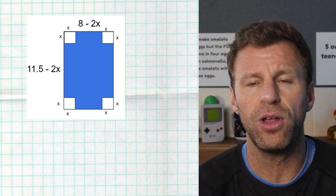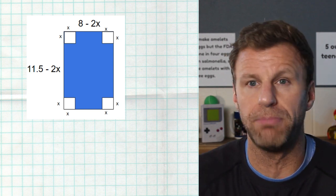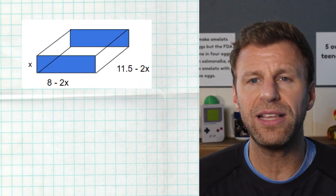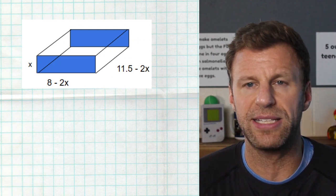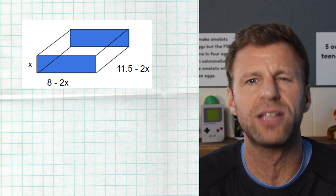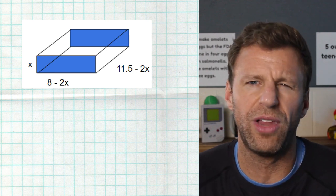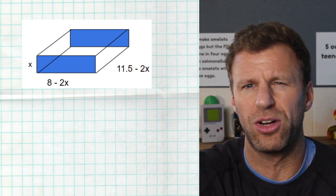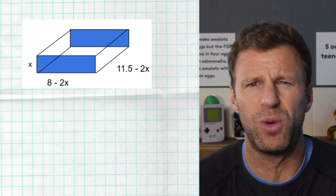And I'm gonna fold those edges up to create my box. So the length of my box is eight minus two x. The width of my box is 11 and a half minus two x. Now, real quick, what you call the length, what you call the width actually doesn't matter, because you can rotate the box and now the length is the width and the width is the length.